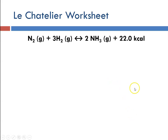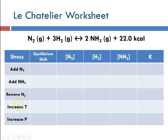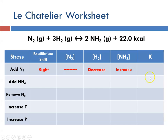Now let's look at a Le Chatelier worksheet for the gas phase reaction of nitrogen plus hydrogen to produce ammonia — the Haber process. It is exothermic; heat is produced. If we add nitrogen, which is a reactant, we expect the equilibrium to shift toward products to the right. That means hydrogen concentration will decrease, ammonia concentration will increase, and Keq remains the same because changes in concentration don't affect the equilibrium constant value.